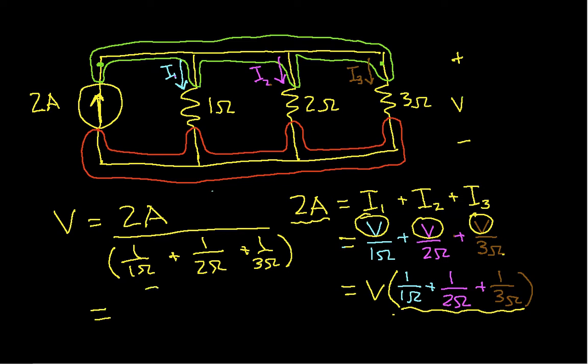I'm at the point now where I can just compute this. I'll do it in two steps. We have 2 amps over 1 over 1-ohm plus 1 over 2-ohms, so that's 1 plus 1 half plus 1 third, which should be 1.833.